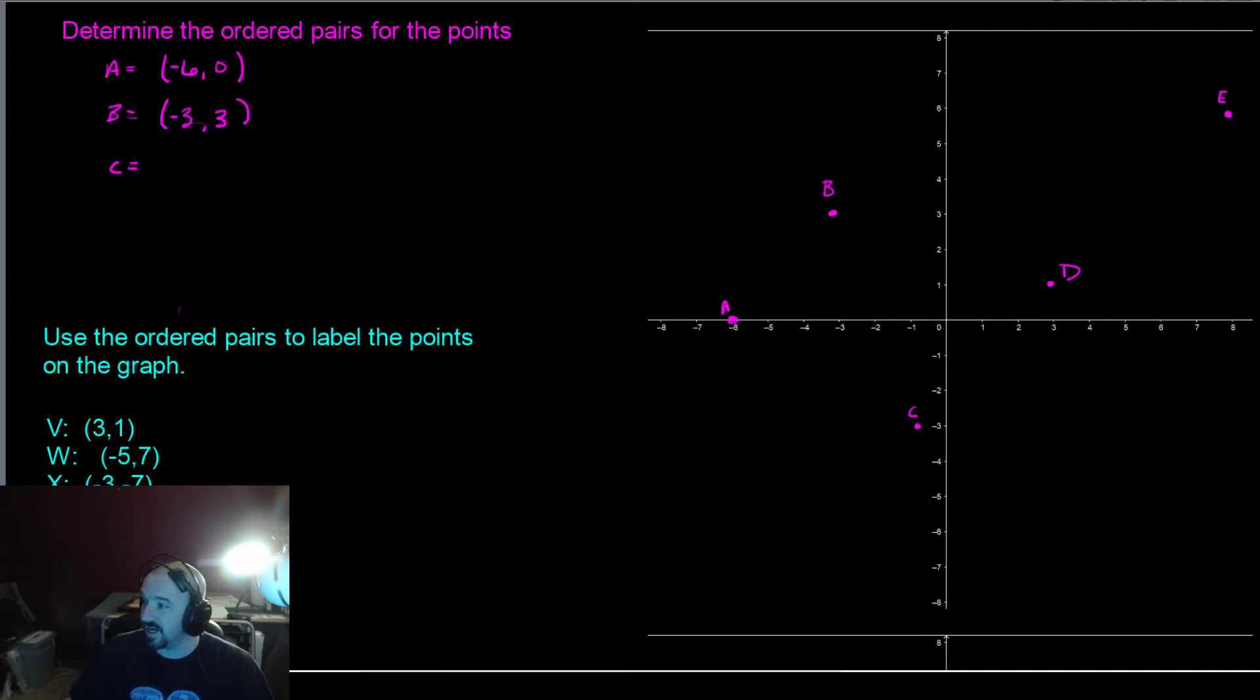Letter C. We are at negative 1. We drop down. It looks like we drop down to negative 3. So negative 1, negative 3.